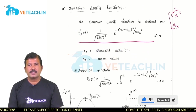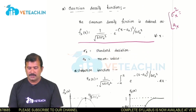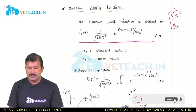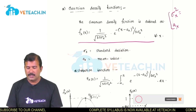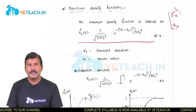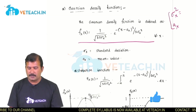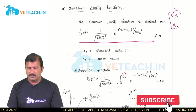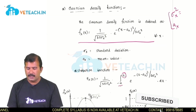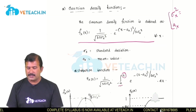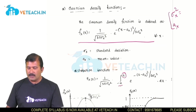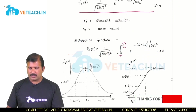The distribution function, as we know, is the integral of the density function. So this is 1 by square root of 2 pi sigma x squared, integral from minus infinity to x, e power minus of x minus Ax squared by 2 sigma x squared.